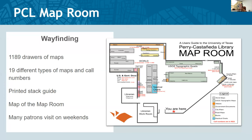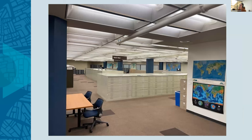There are 1,189 drawers of maps. There are 19 different types of maps, and with that 19 different call numbers. We have government document call numbers, which are inherently confusing, house call numbers, and LC call numbers. When I came into the position, there was only a printed deck guide — you basically looked up a place alphabetically, and it gave you a ton of information like which drawer and what the call number range is.